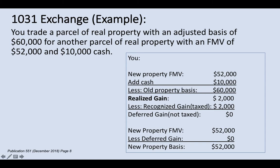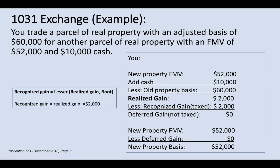The recognized gain is always taxable. The recognized gain is the lesser of the realized gain or the boot. Boot is basically any cash you received — that's called boot. If you also have a liability like a mortgage assumed by the buyer, that's boot too. So compare your realized gain of $2,000 with the cash received of $10,000. The realized gain is lesser, so your recognized gain equals the realized gain — $2,000.